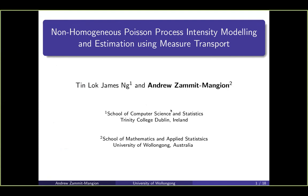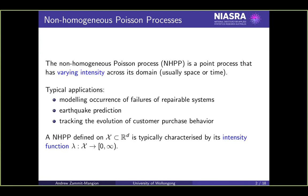The topic is non-homogeneous Poisson process intensity estimation. NHPPs are point processes that have varying intensity across the domain. I'm interested in spatial-temporal statistics, so I view them as spatial or temporal point processes where the intensity function changes in space and time.